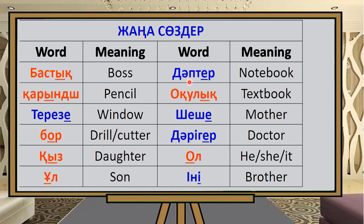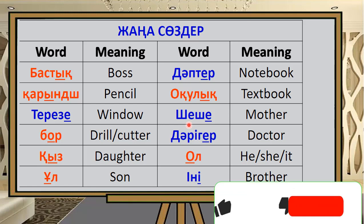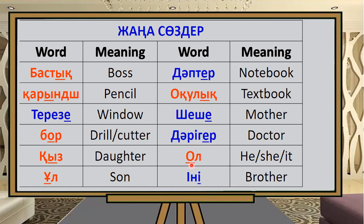Oul is used for both 'he' and 'she' in Kazakh — it covers both pronouns.